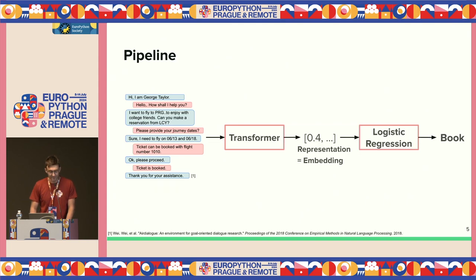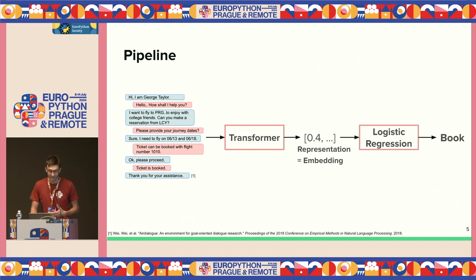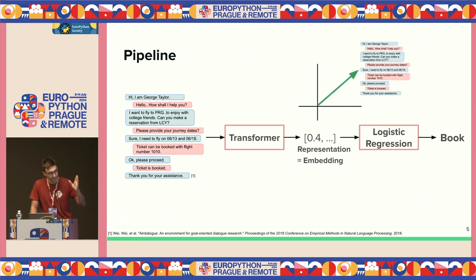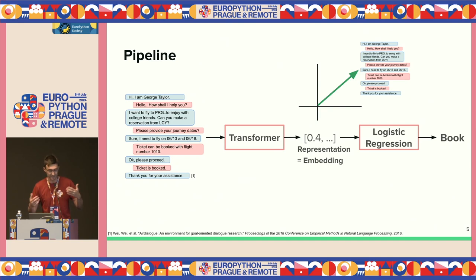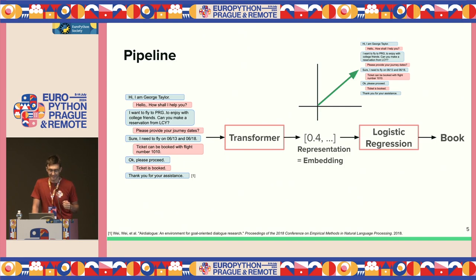This problem can be translated into the following pipeline. You have the conversation, pass it to the transformer, and get a representation. Whenever you see squared brackets with a floating point number in my slides, that's a vector — a representation pointing to the meaning of the conversation. I'll be using 'embedding' interchangeably. Once we have these embeddings, we pass them to logistic regression, and finally get our predictive outcome.